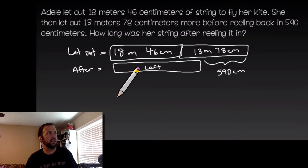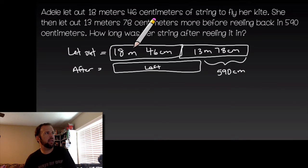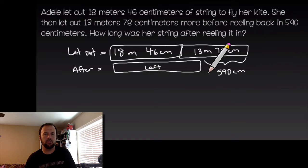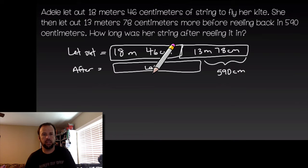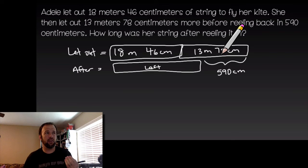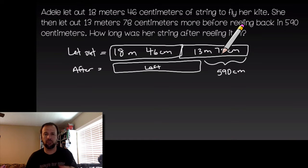Here's how I diagrammed this. She let out 18 meters 46 centimeters first, then another 13 meters 78 centimeters — so that's how much she let out total to start. Then she reeled it back in 590 centimeters. What the question is asking is how long was her string after reeling it in — what was still left out. We need to combine those two amounts first to get the total let out, then subtract that 590 centimeters.